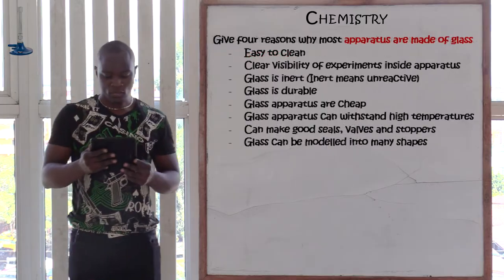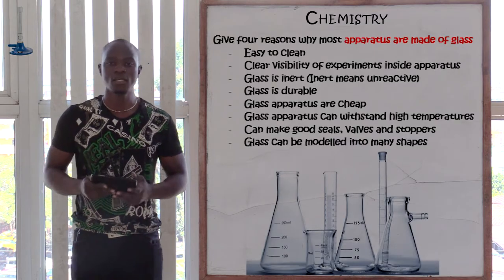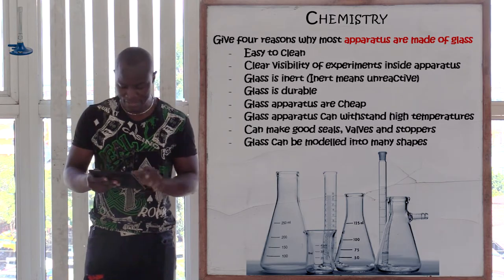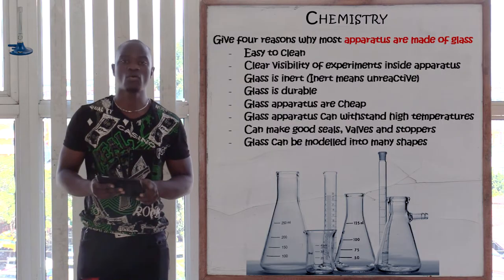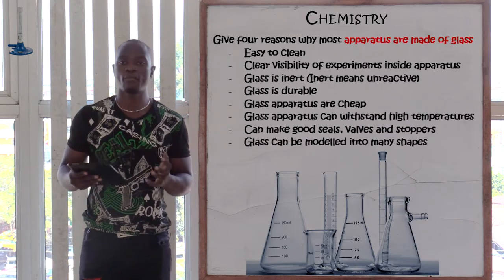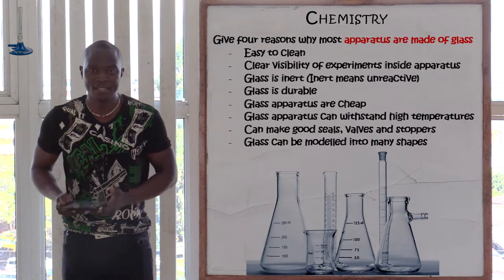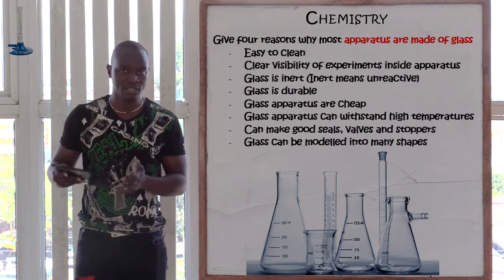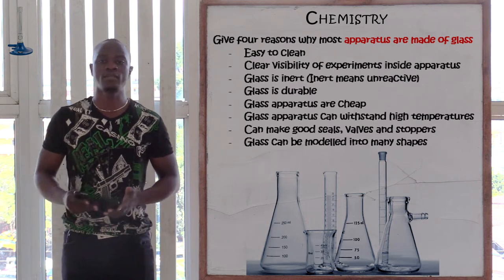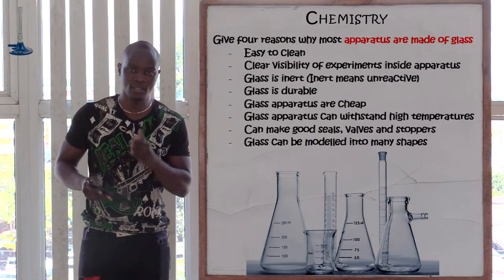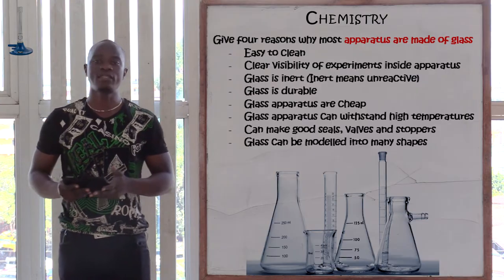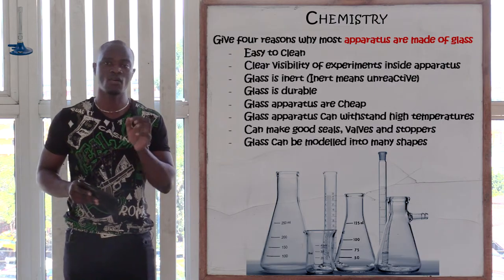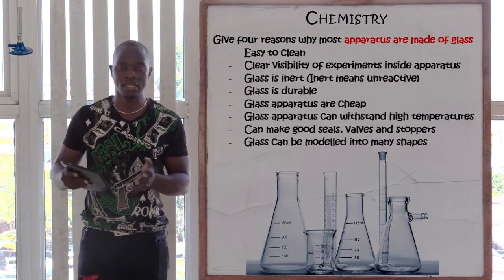Let's look at question number three. We are being asked: give reasons why laboratory apparatus are made of glass. The first reason is that glass is easy to clean. The other reason is for clear visibility of the experiments or the reactions taking place inside the apparatus.